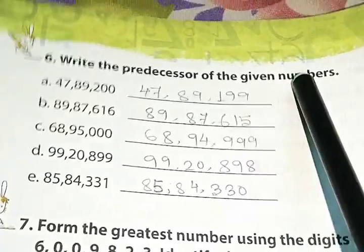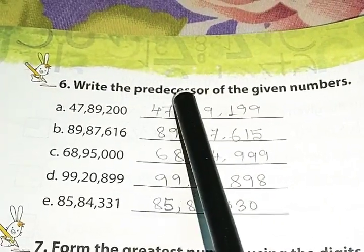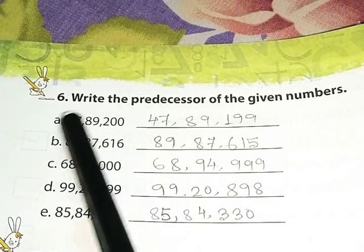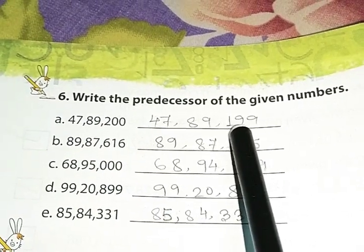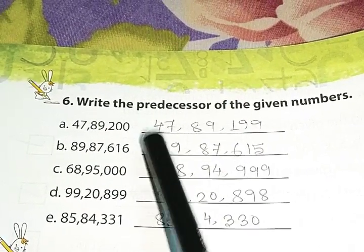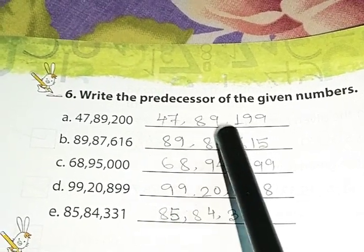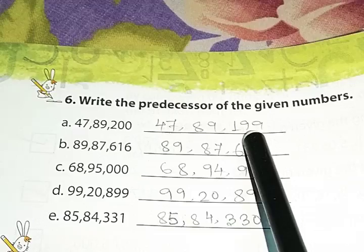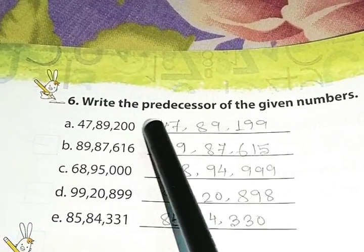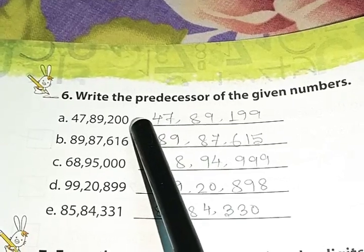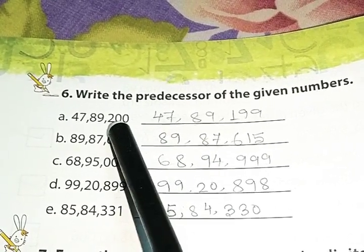Write the predecessors of the given numbers. Pre means before. So, you have to write down the before number of the particular numbers. The answer will be 47,89,199. In case of predecessors, we will start writing from the right side. So, the before number of 200 is 199.